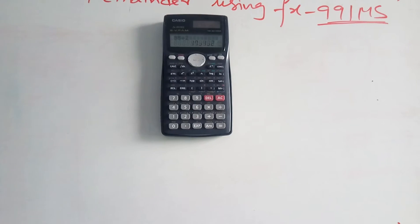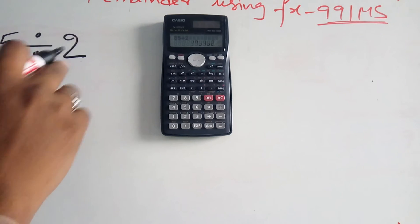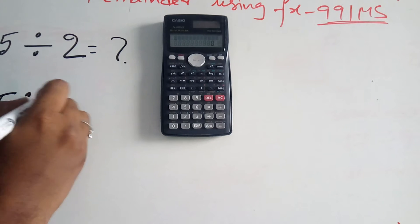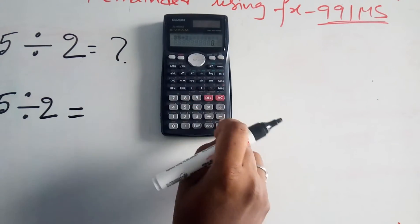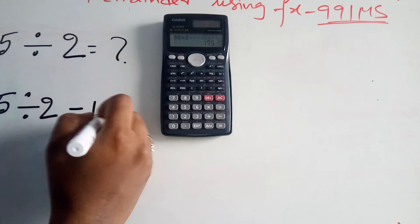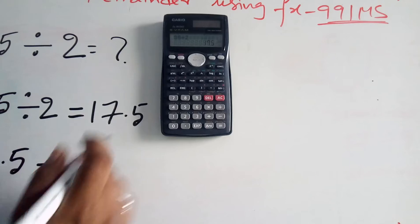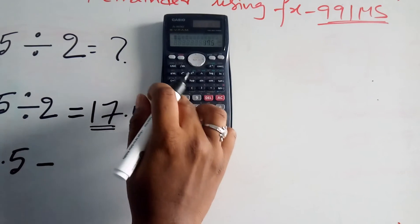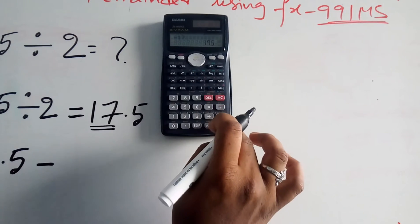The second method: suppose 35 divided by 2. First press 35, then the division symbol, then 2, and press equal — the decimal value is 17.5. Now you subtract the whole number part: the decimal value is 17.5, and you subtract 17.